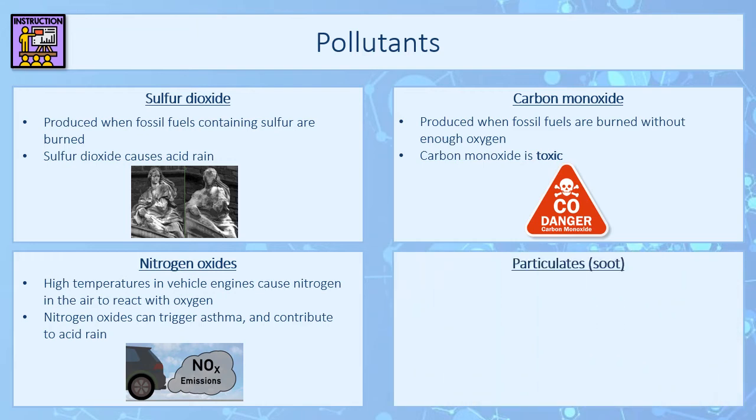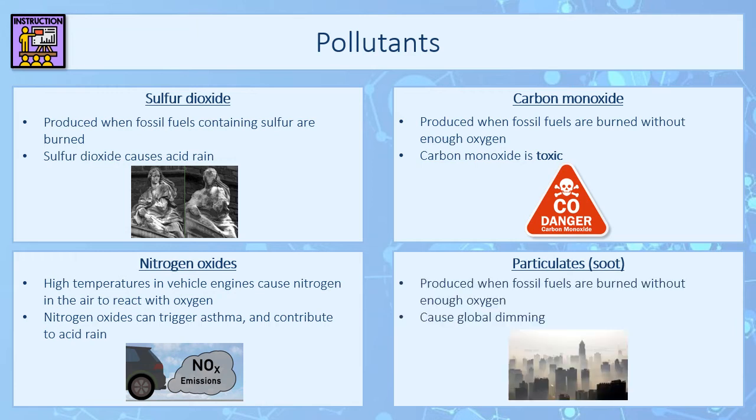The fourth and final pollutant is particulates — sometimes called soot. These are very small solid particles of carbon produced when fossil fuels are burned without enough oxygen. The carbon in the fossil fuel isn't being oxidized and so remains as solid carbon particles. One of the problems with this pollutant is that it causes global dimming. You might have heard the term smog — a fog containing soot and smoke that reduces the amount of light getting to ground level.